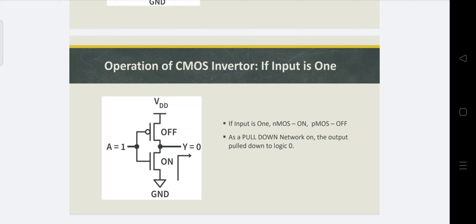For a two-input configuration, we use two NMOS transistors and two PMOS transistors. Both NMOS transistors are pull-down network transistors and both PMOS transistors are pull-up network transistors. For AND operation, both NMOS transistors are connected in series — this series connection requires both inputs to be high to produce logic 0 or turn on the pull-down network. If any one input is low, it turns off that NMOS transistor and cuts off the connection from ground to output.